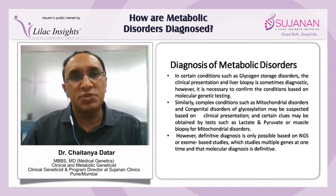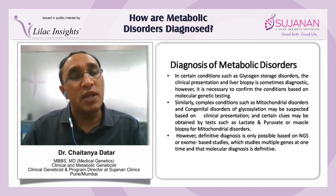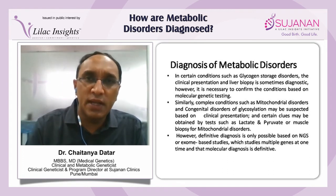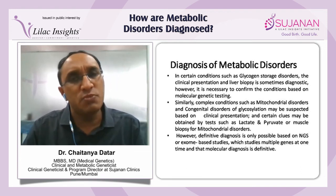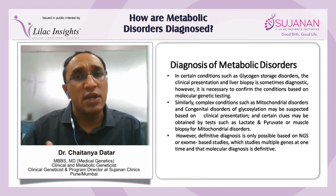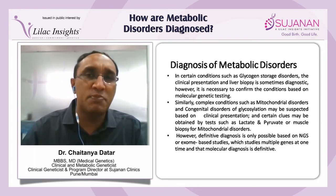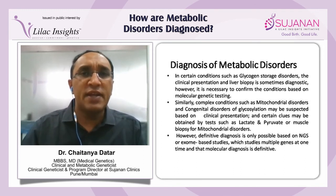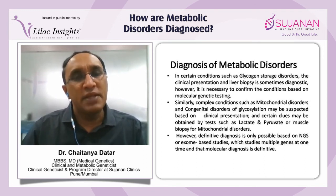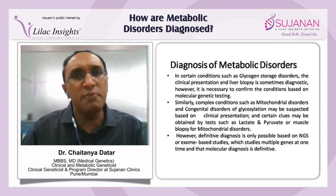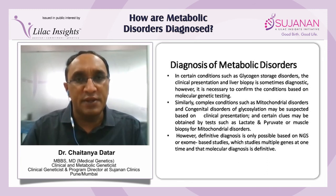Similarly, complex conditions such as mitochondrial disorders and congenital disorders of glycosylation may be suspected based on the clinical presentation, and certain clues may be obtained by tests such as transferrin isoelectric focusing for CDG, or lactate/pyruvate ratios or muscle biopsy for mitochondriopathies. However, a definitive diagnosis is only possible based on NGS or exome-based studies, which study multiple genes at one time, and that molecular diagnosis is definitive. Thank you.